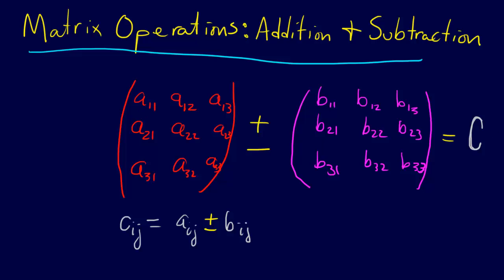We do element by element. So the first element C11 is A11 plus B11 if we're doing addition. The next element in C, for the 12 spot, it's going to be A12 plus B12, and so forth.